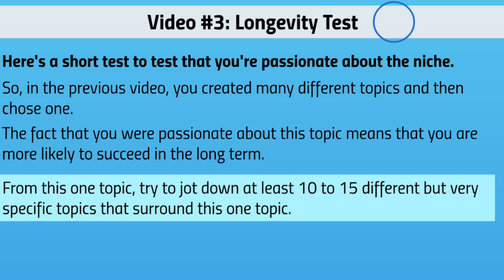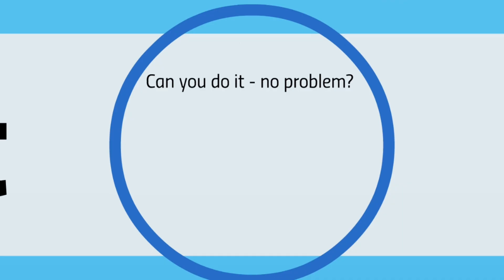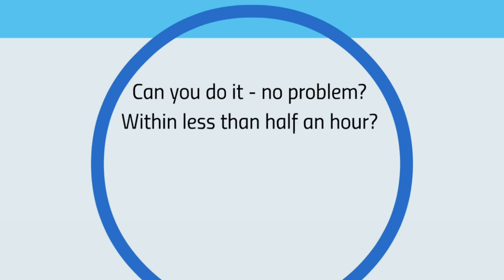For example, with kidney stones we can think about dieting — certain foods create kidney stones — and certain supplements can help pass the stone without surgery. Can you create 10 or more topics? With lowering cholesterol, we have dieting, exercise, cardiovascular exercise, aerobic exercise, and other options. If you got 10 within less than half an hour, that's a good sign. It means your brain can produce topics right away and that you're actually passionate about this niche. If you got 15 or 20, even better.